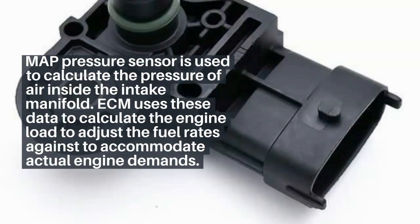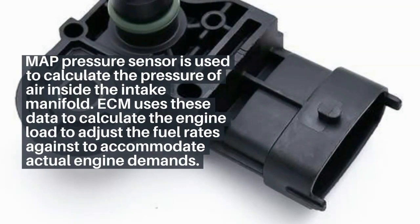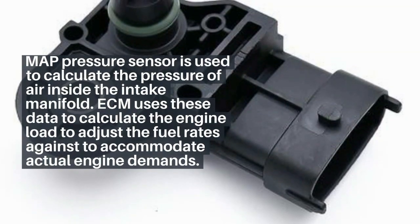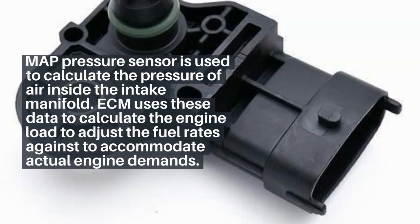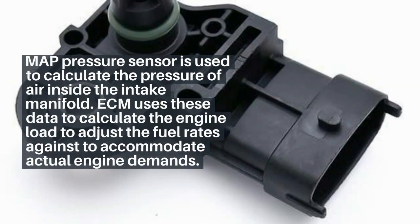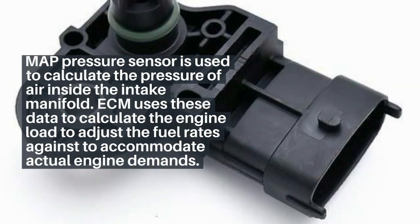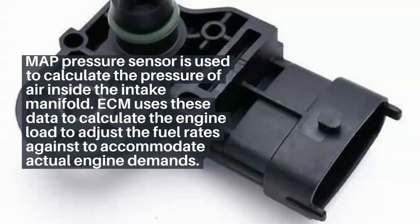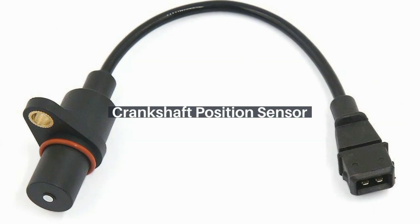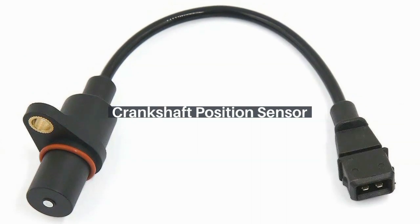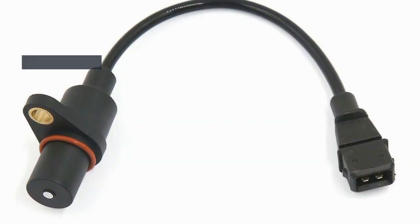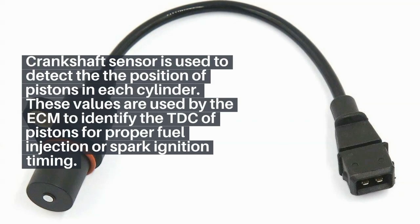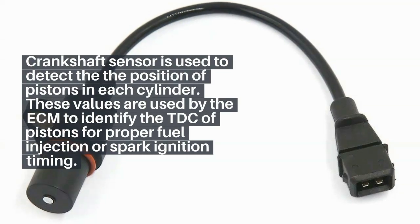Two: Manifold Absolute Pressure sensor (MAP sensor). The MAP sensor is used to calculate the pressure of air inside the intake manifold. The ECM uses this data to calculate the engine load and adjust the fuel rates to accommodate actual engine demands.